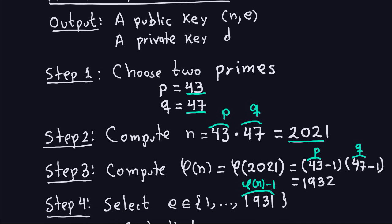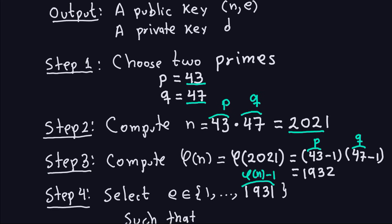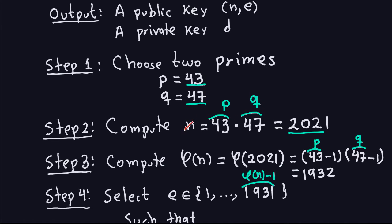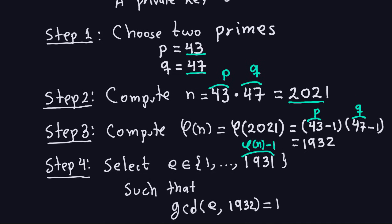Step one: choose two prime numbers. In this case, let's choose 43 and 47 — both are prime. Step two: compute the modulus, which in RSA is always the product of the two primes: 43 times 47 equals 2021. That is the modulus, and it will be public.